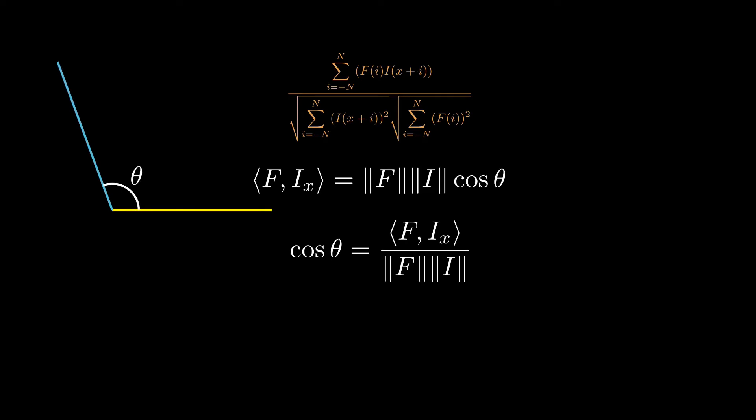In simple words, normalized correlation is equivalent to finding the angle between the two vectors. If this angle is small, then the vectors are pointing towards the same or a similar direction, and then we consider the vectors to be similar.